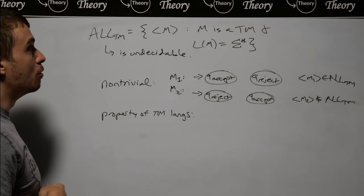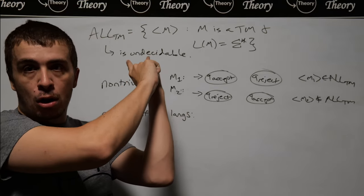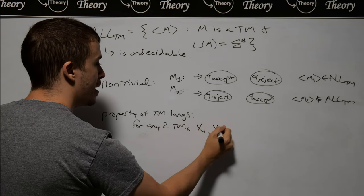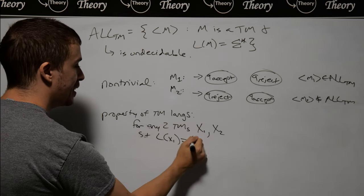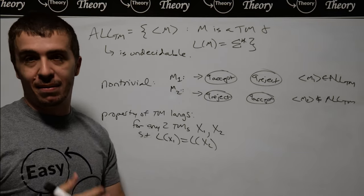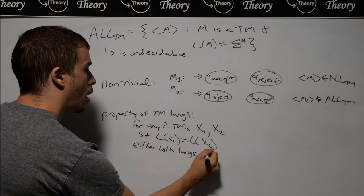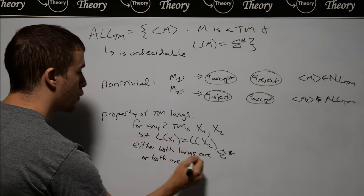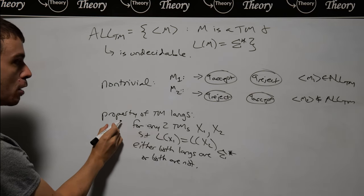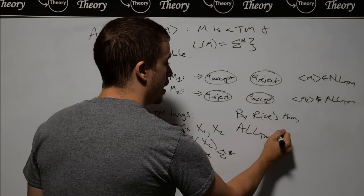Now we need to show it's a property of Turing machine languages — for any two Turing machines with identically the same language, either both are in all-TM or both are not. For any two Turing machines X1, X2, such that the language of X1 equals the language of X2, could one of them be sigma star and the other not? That's clearly false because we assumed they're identically the same. So either both languages are sigma star or both are not. It must be a property of Turing machine languages. Since this is a non-trivial property of Turing machine languages, by Rice's theorem all-TM is undecidable.